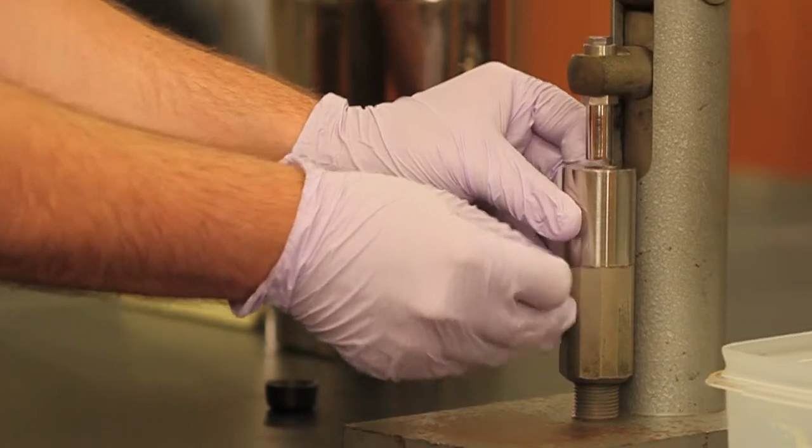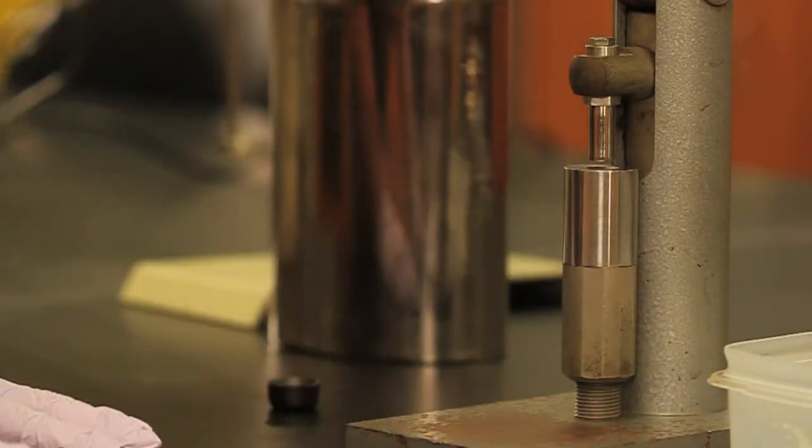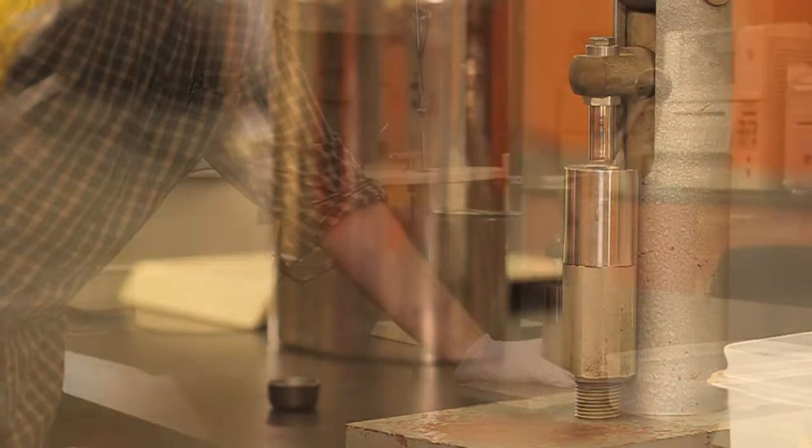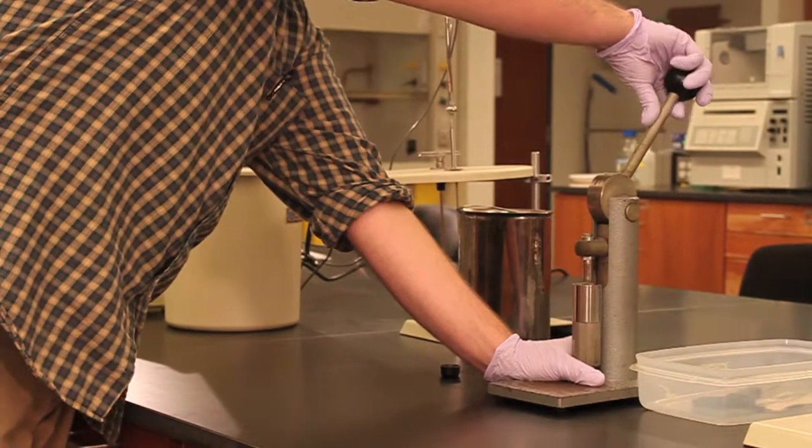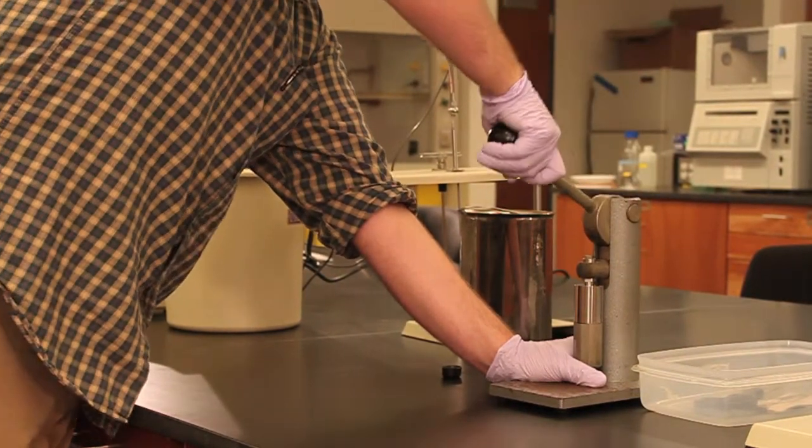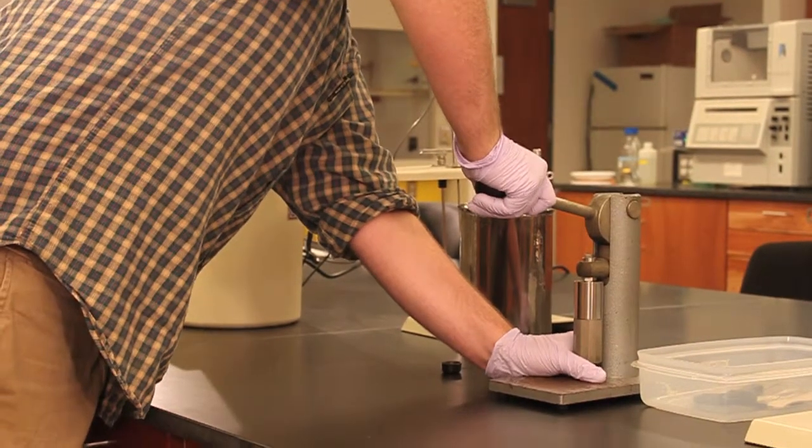Slide the die housing containing the die and the sample onto the press. Once in place, press the lever down to form your pellet. If the press starts to come off the counter, you've definitely pressed hard enough.